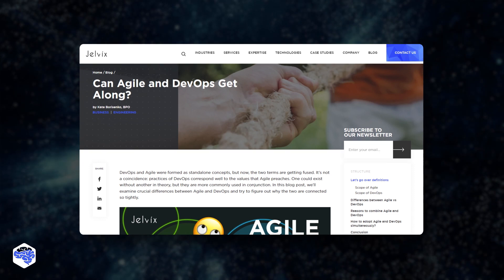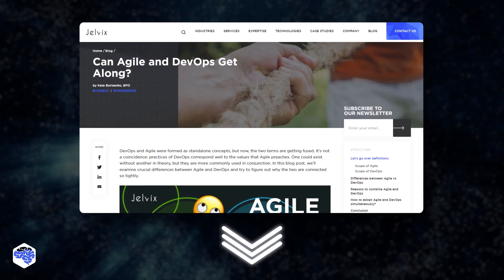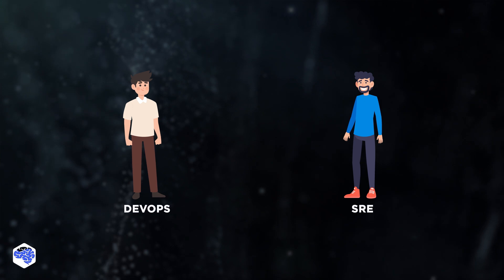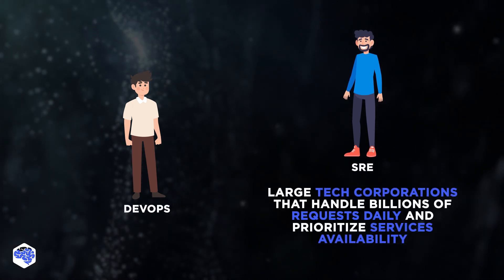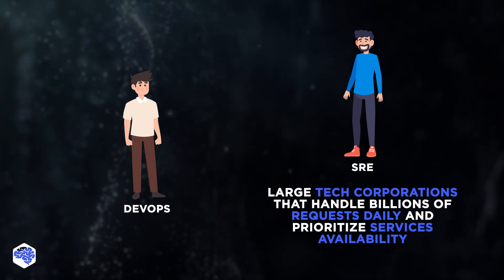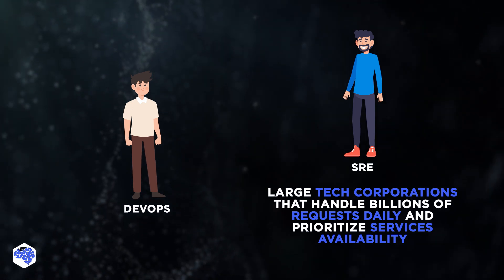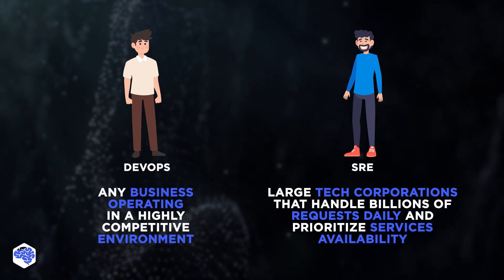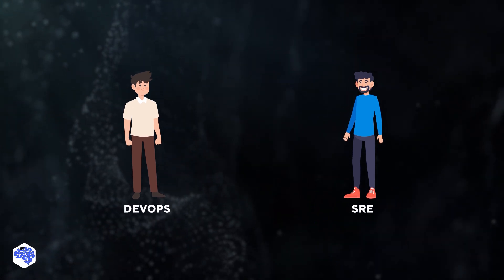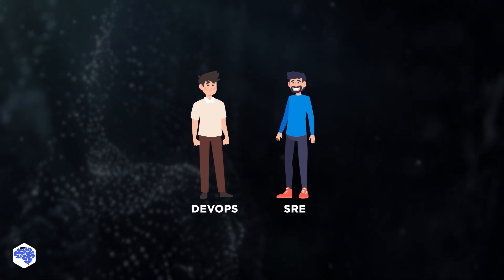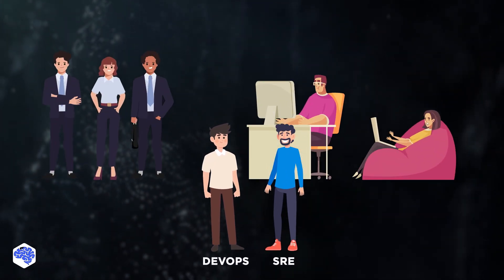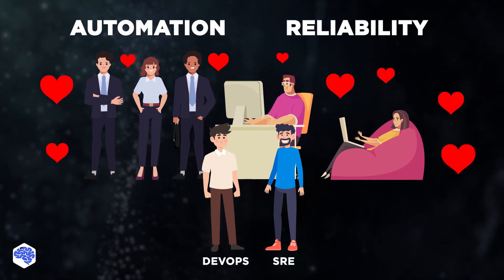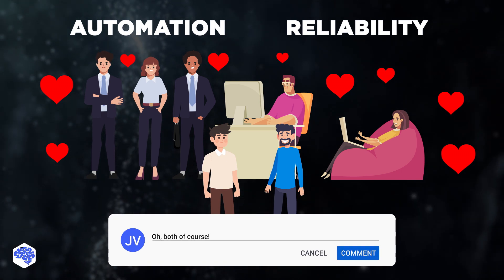We highly recommend checking the article where we describe in detail whether Agile and DevOps can get along — the link is in the description. Based on Jelvix's experience, SRE teams are suitable for large technology corporations that handle billions of requests daily and prioritize service availability. DevOps culture and cross-functional teams benefit any business operating in a highly competitive environment. Both help bring development and operations teams together, sharing similar responsibilities with a focus on automation and reliability.